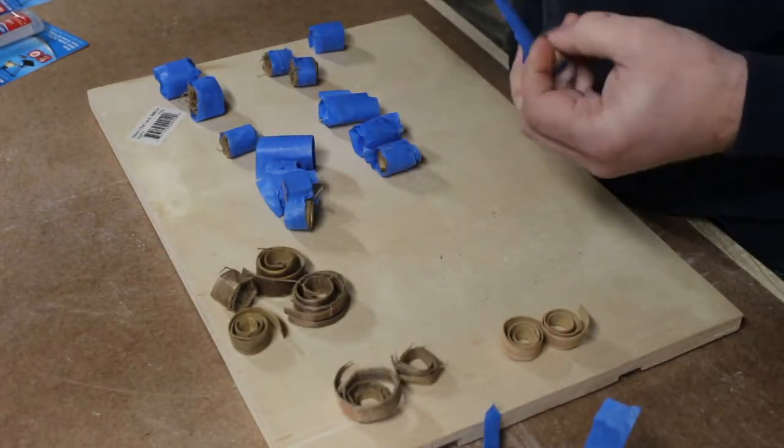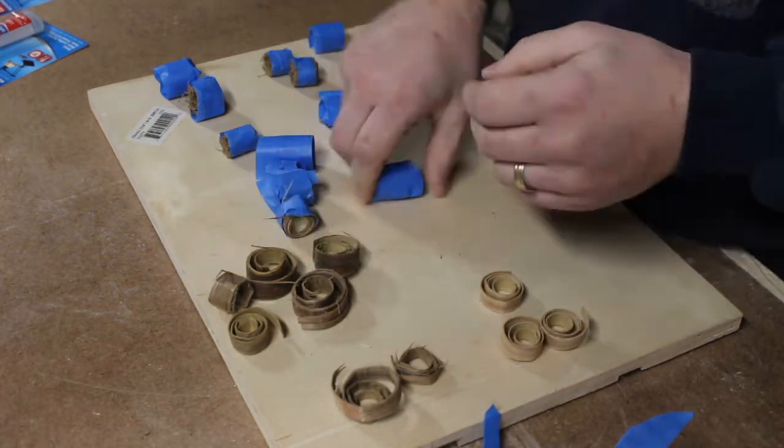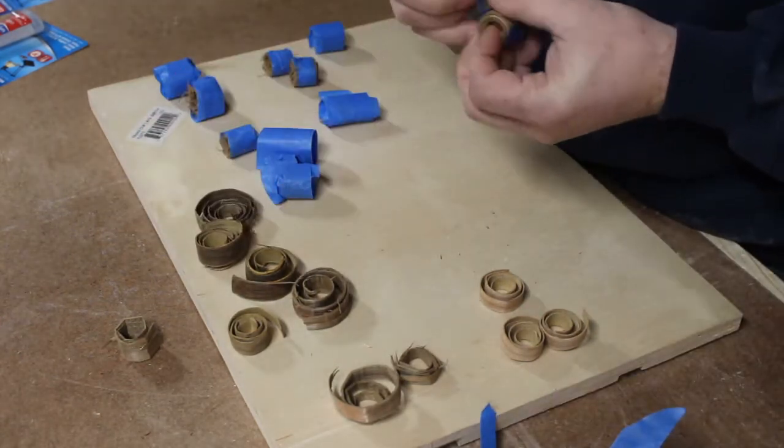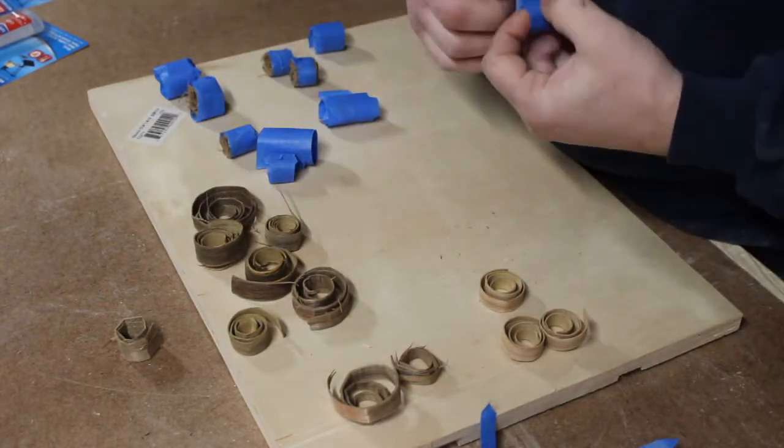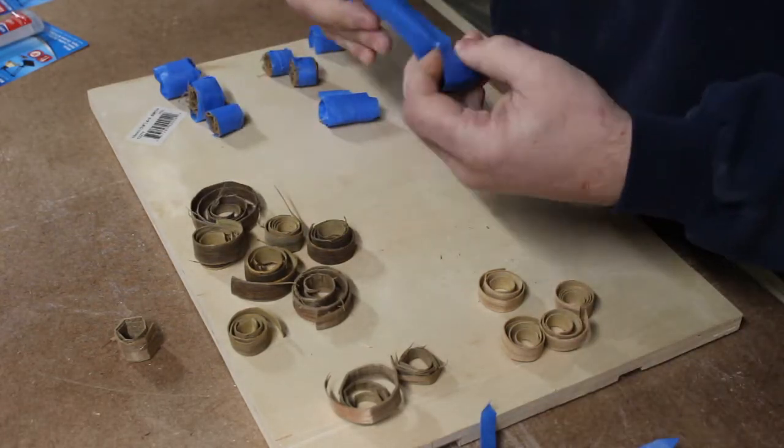You can see here that some of my veneer was a bit too thick, and instead of bending nicely around the handle, it more or less snapped and made square edges and angles. You can either boil these for a little longer or just do what I did and make a whole bunch of extras so that you have some in case they fail.